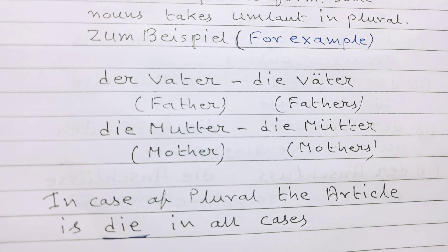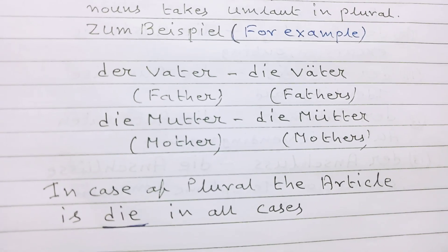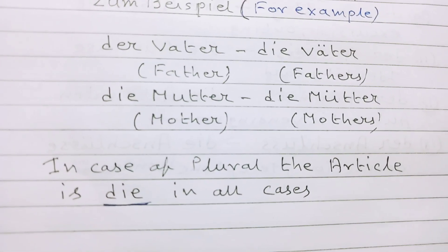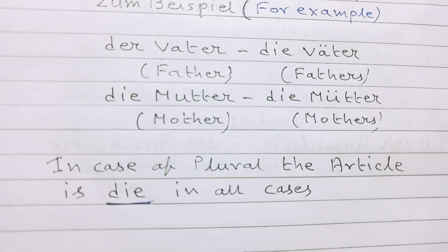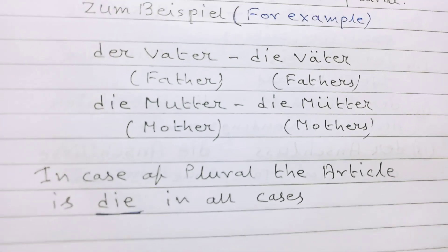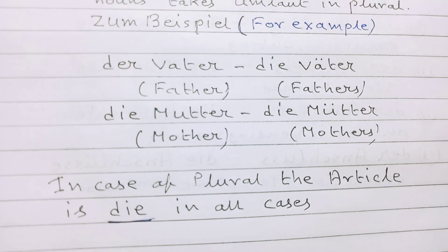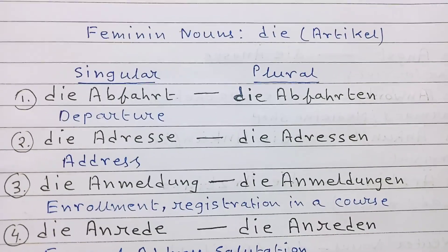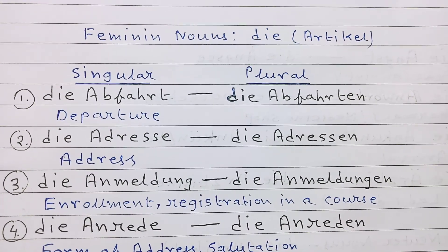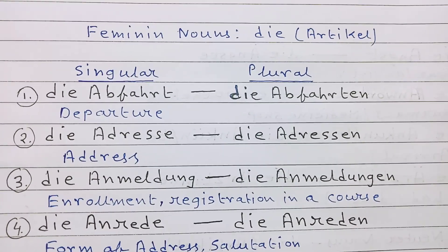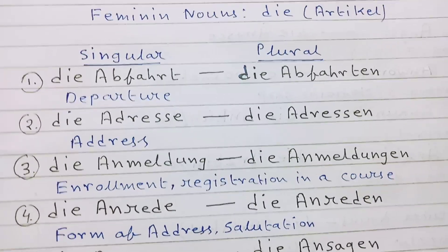Die Mutter, die Mütter — mother, mothers. In case of plural, the article is die in all cases. Feminine nouns: the article, singular and plural.